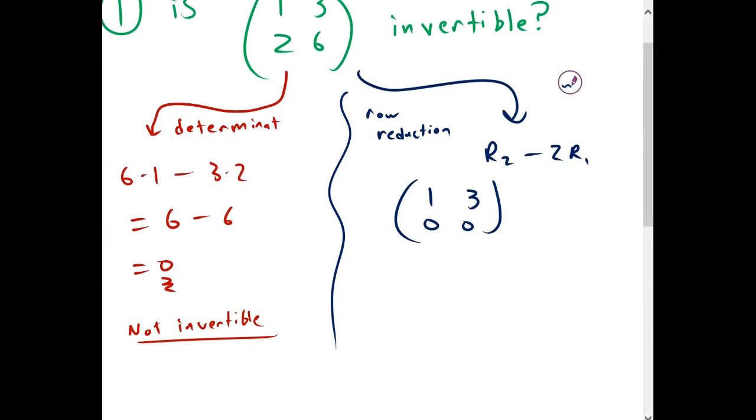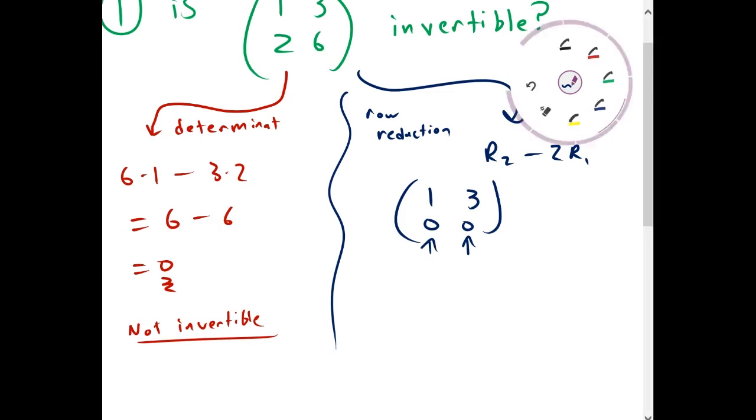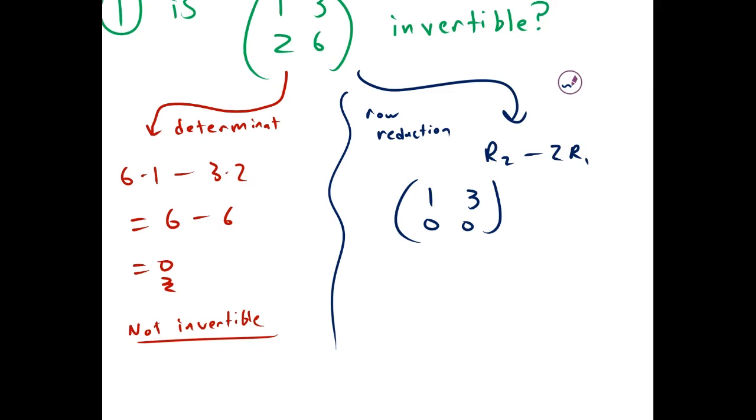So since there's no way we can get a one here without getting something here, we can't get this into reduced row echelon form. Well, it is in reduced row echelon form, but the reduced row echelon form is not the identity matrix. So that means that matrix is not invertible.